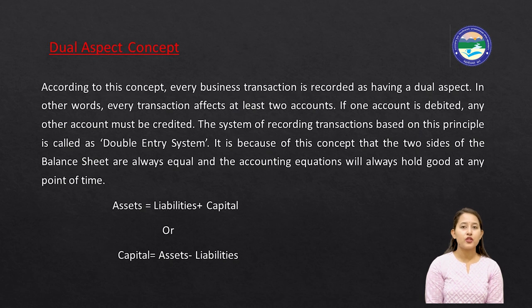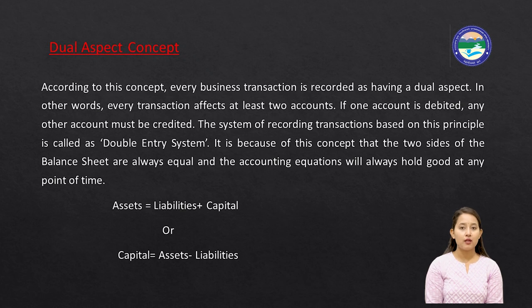For example, suppose you are purchasing goods for cash. This affects two accounts: the purchase account (balance of goods increases, so it is debited) and the cash account (cash balance decreases, so it is credited). Thus, purchasing goods has affected two accounts — purchase account is debited and cash account is credited.